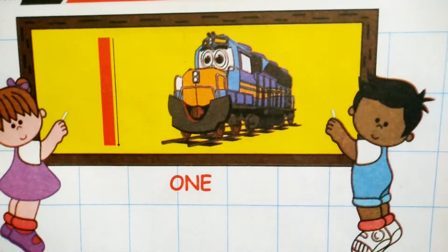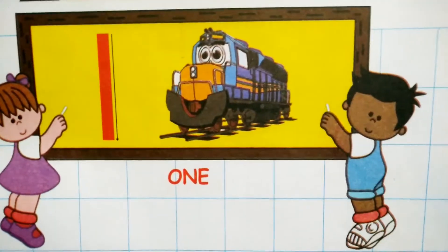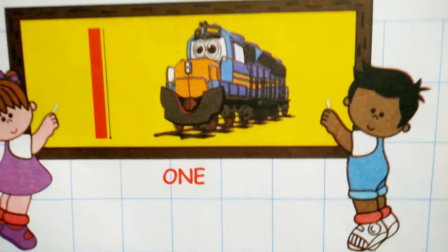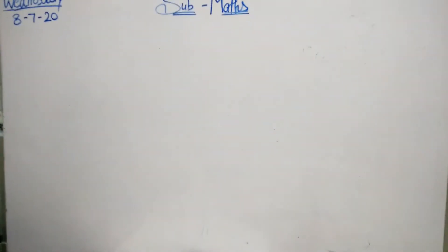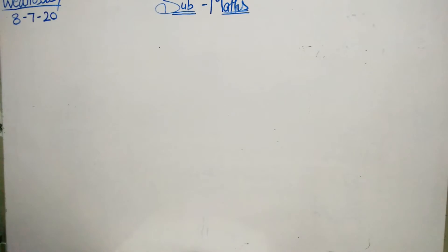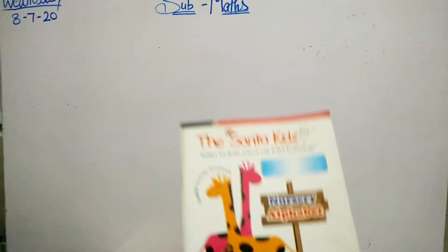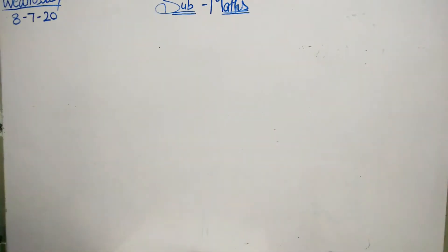Now I am going to teach you number 1. This is number 1. Can you see there? Number 1. For example, 1 pencil, 1 pen, 1 duster, 1 notebook, 1 marker. This is all number 1.